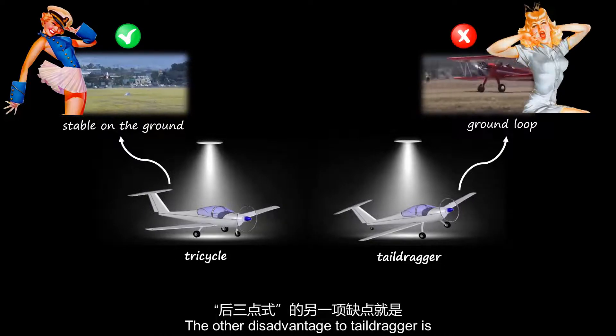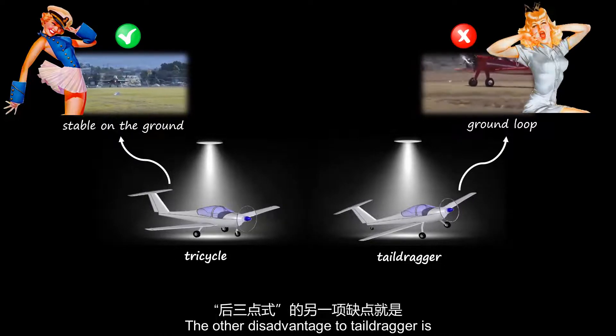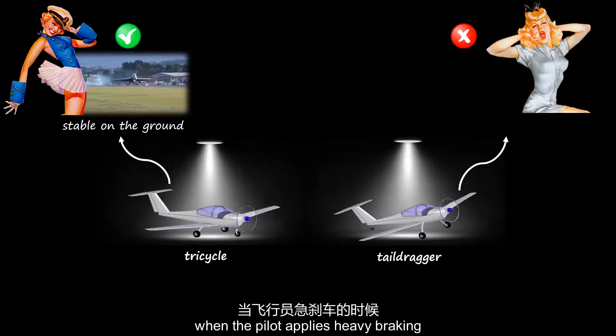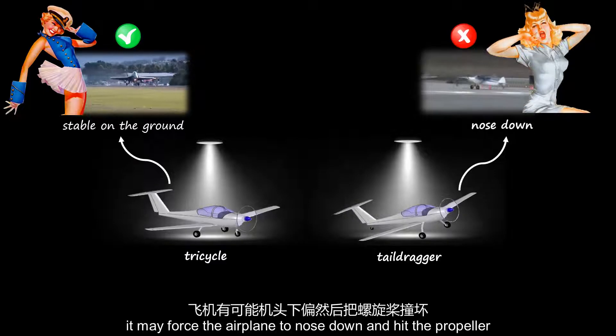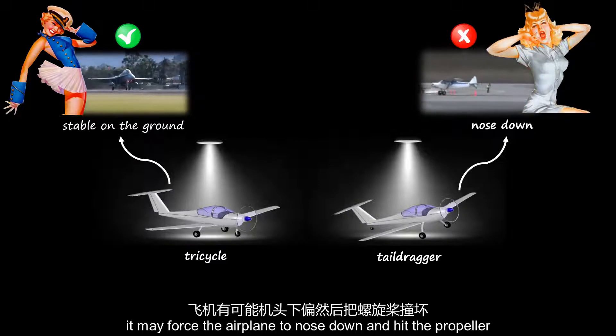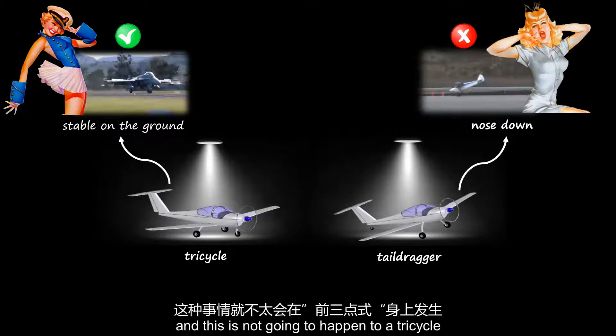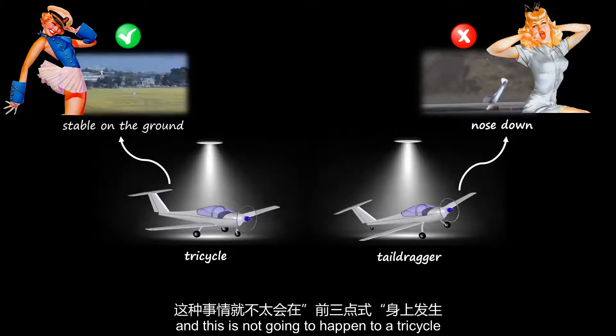Another disadvantage of the tail dragger is that when the pilot applies heavy braking, it may force the airplane to nose down and hit the propeller. This is not going to happen with a tricycle.